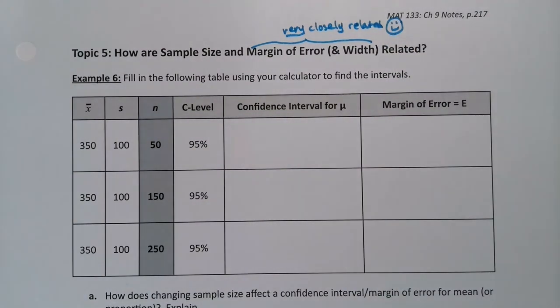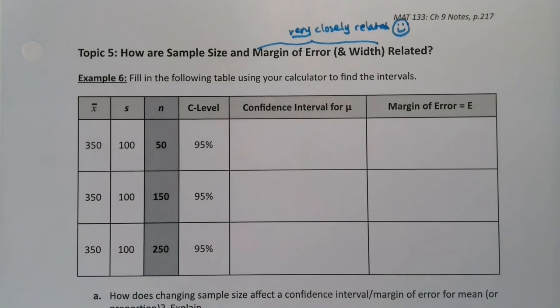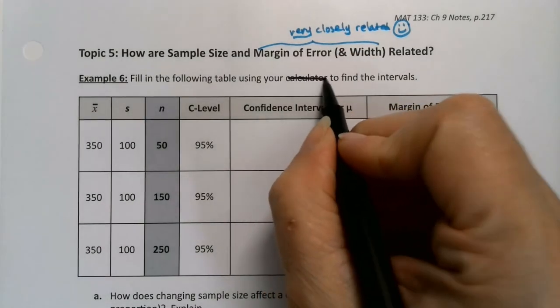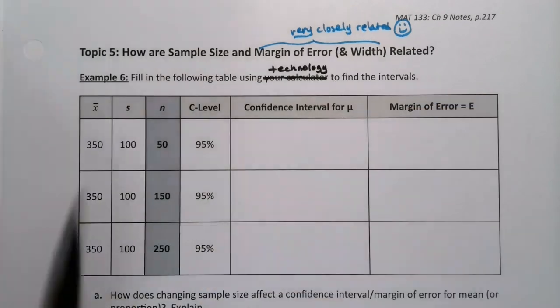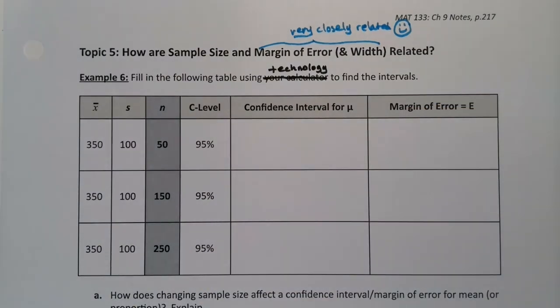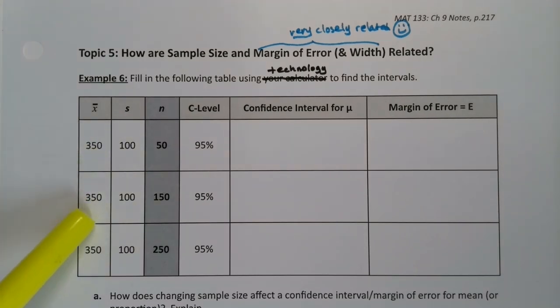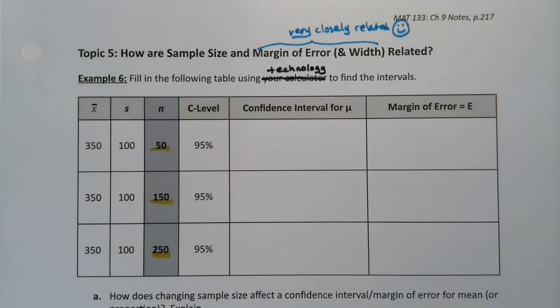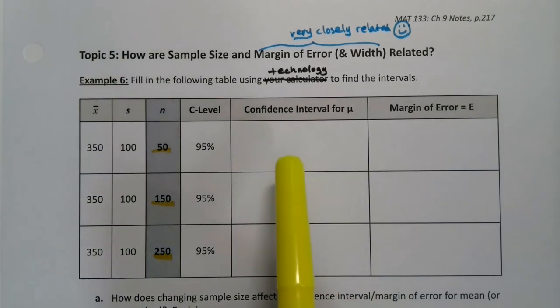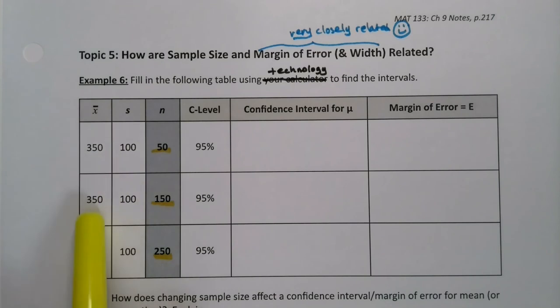Alright, so we are going to fill out this table and I said with your calculator but of course you could use StatCrunch as well so I'm just going to write 'using technology'. You can see in this table I left x bar the sample mean the same throughout, S the same throughout. What I'm changing is sample size and you can see that's why I made that portion gray so you could note that I was changing those values. And then the confidence level stays the same throughout. So I'm going to find the confidence interval for mu of course because these are x bars and S's given to us and then I'm going to find the margin of error for all those values.